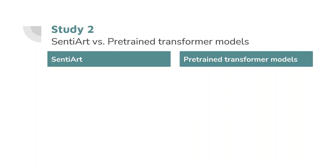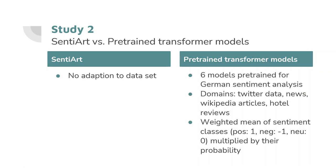In our second study, we compared SentiArt without any adaptation to pre-trained transformer models. To find suitable transformer models, we went on Hugging Face, a large platform where machine learning models can be shared with the community. We searched for models pre-trained for sentiment analysis of German texts and chose six models trained with data from different domains. Some models were based on Twitter data, some on news or Wikipedia articles, and others on hotel reviews. These models assign the labels positive, negative or neutral to each sentence and output the probabilities for each label. To transform results into one single sentiment score per sentence, we calculated the weighted mean.